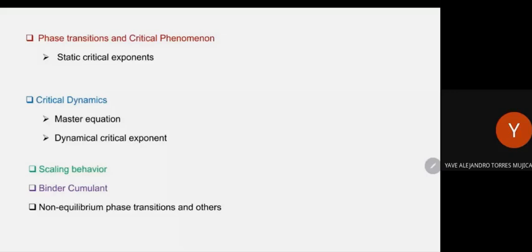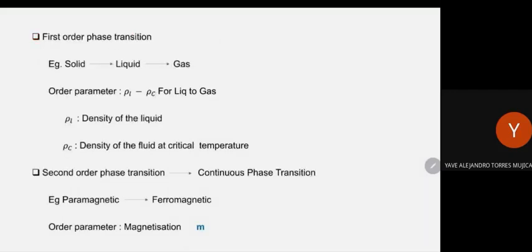There are two kinds of phase transitions. One is the first order phase transition — an example is the solid to liquid and liquid to gas transition. The other is the second order phase transition, which we call the continuous phase transition. For the first order phase transition, the thermodynamic definition is that the first derivative of the free energy with respect to the phase transitional parameter will be discontinuous.